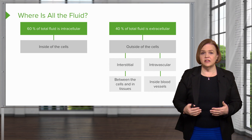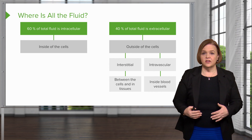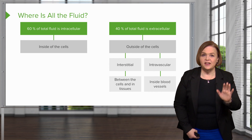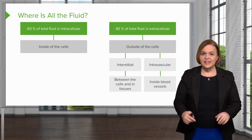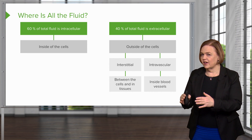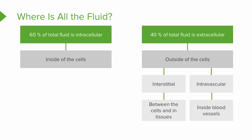Interstitial is between the cells and in the tissues. Intravascular is inside the blood vessels. Fluid is either inside the cell or outside the cell. The two places fluid is when you're outside of the cell: interstitial or intravascular. Now before we go on, see if you can sketch that out really quickly in your notes — it's going to matter as we get going.